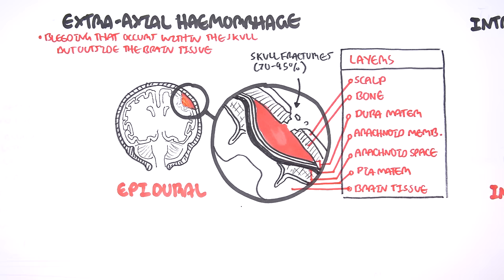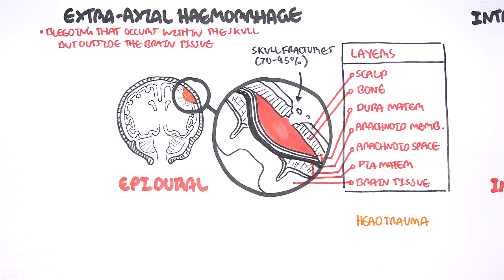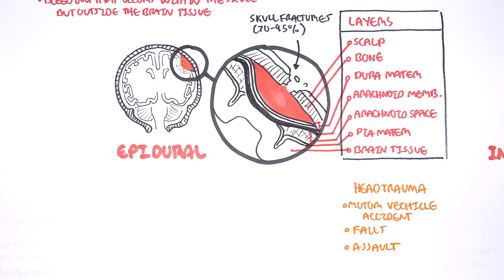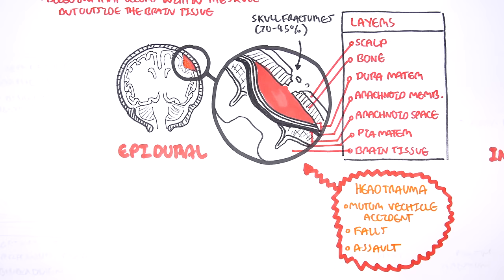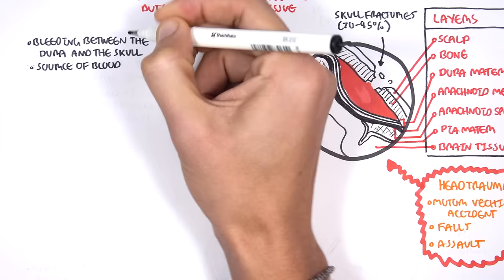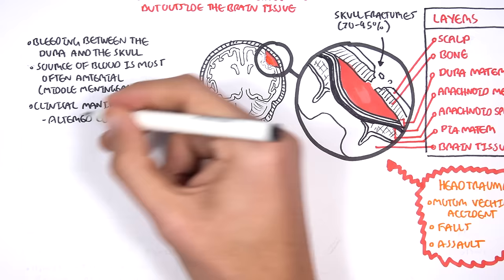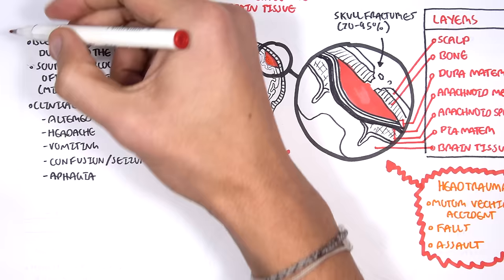Epidural hemorrhage is often a result of trauma to the head. About 70 to 95% of epidural hemorrhages present with skull fractures as well. Causes include motor vehicle accidents, falls, and assault. The bleeding occurs between the dura mater and the skull, and the source of the blood is most often arterial — for example, from the middle meningeal artery. Clinical manifestations include altered state of consciousness, headache, vomiting, confusion, seizures, and aphasia.